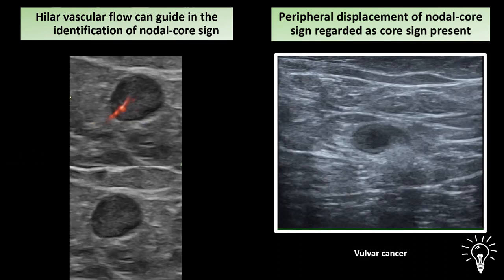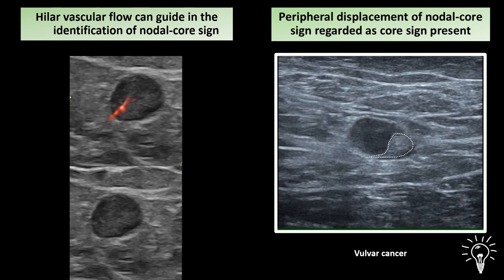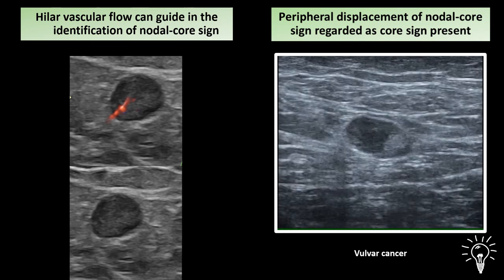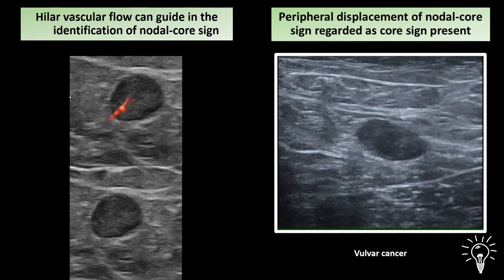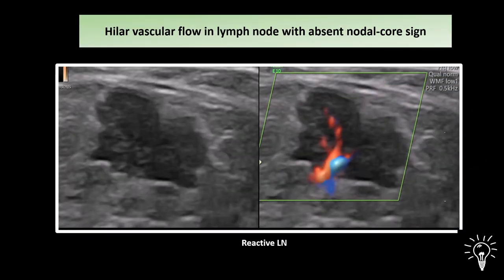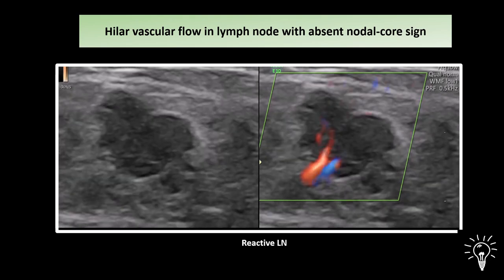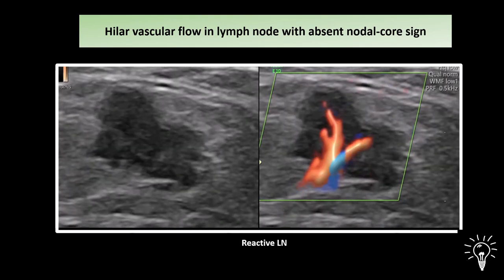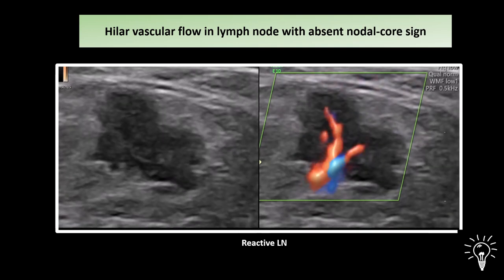Please note that peripheral displacement of the nodal core sign is still regarded as the nodal core sign being present. The medulla may be displaced to the periphery due to large intranodal metastatic lesions from vulvar cancer. Even when the hyperechogenic nodal core sign is absent, hilar vascular flow may be detected, as seen in this reactive lymph node.